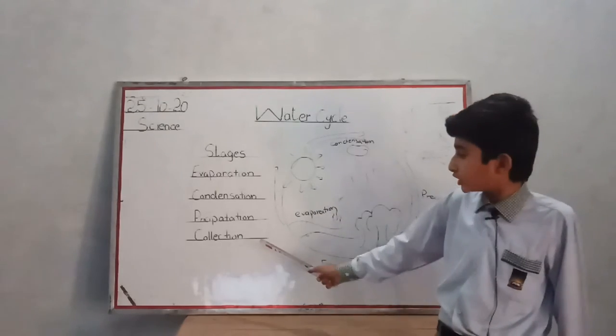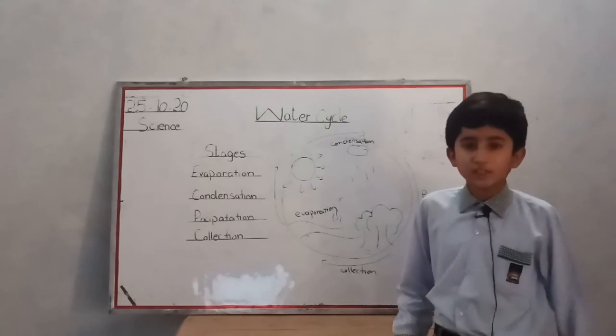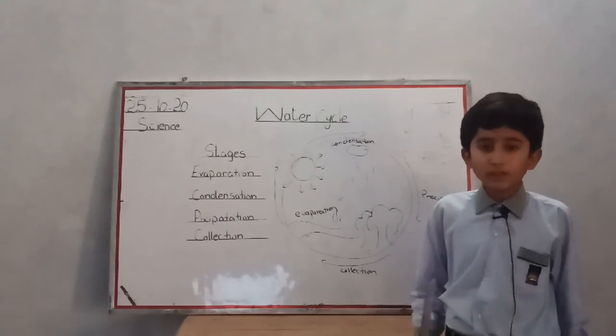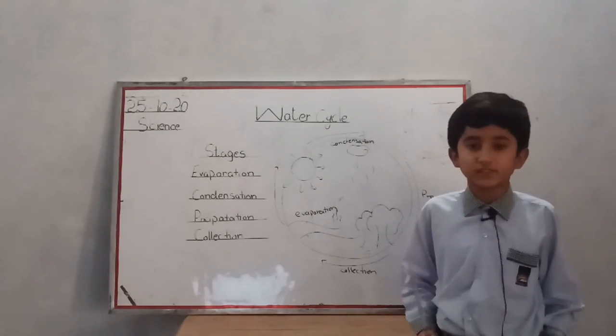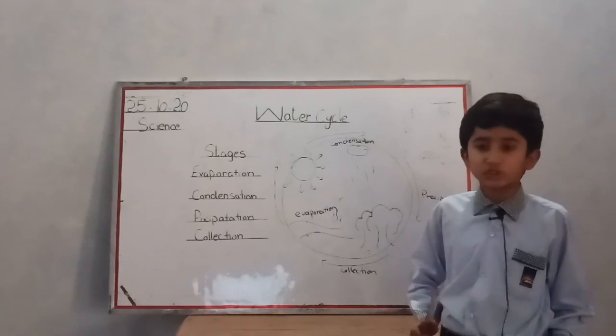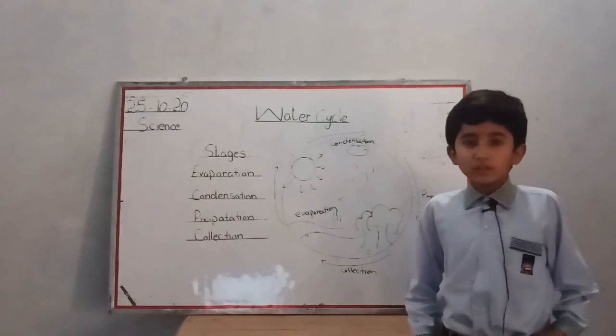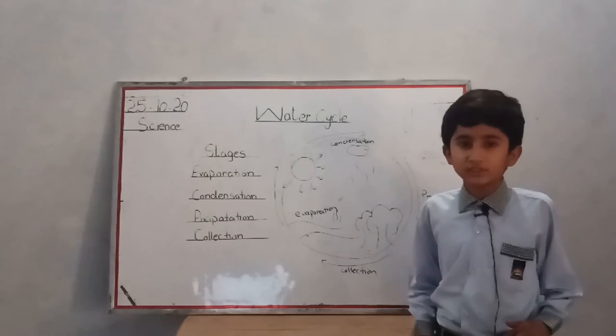Now I will tell you about collection. When rain starts falling, some water soaks into the ground and some collects in rivers, oceans, and lakes. This process is called collection of water and the process of water cycle starts again.